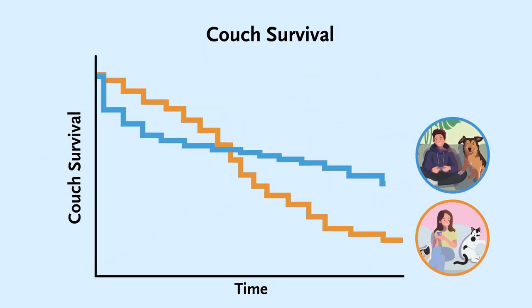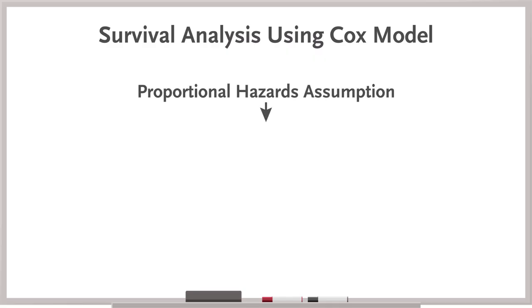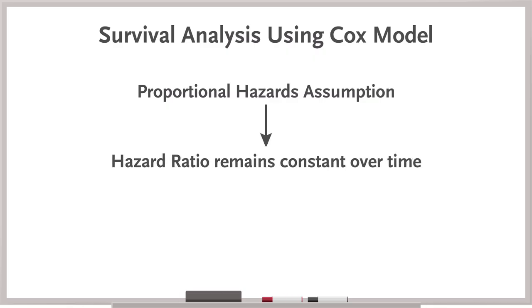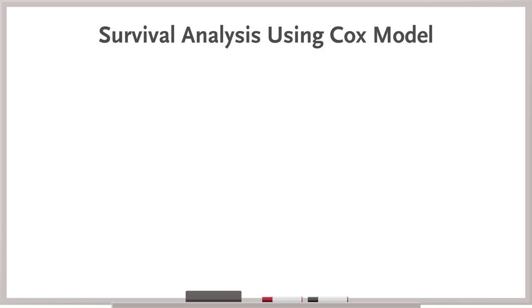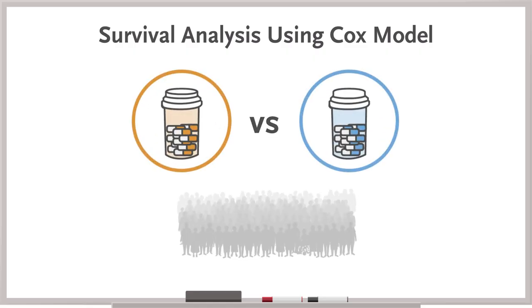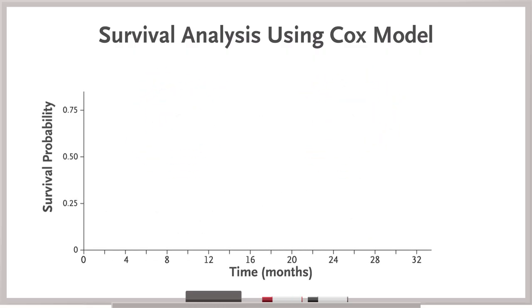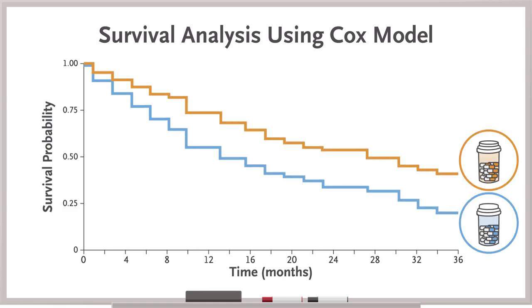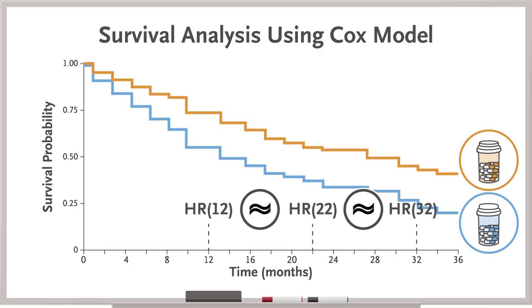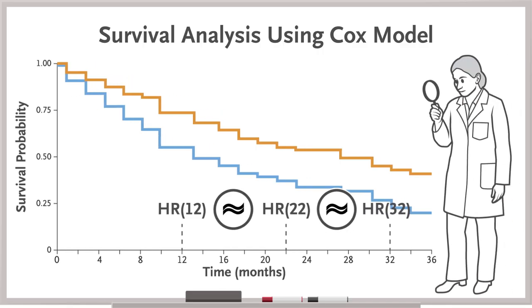But as soon as you plot your data and stare at the two crossing curves, you realize you have a problem. Survival analysis using a Cox model relies on the proportional hazards assumption, which says that the hazard ratio — that is, the rate of the outcome in one group relative to the other — remains constant over time. When you look at the Kaplan-Meier curves of survival over time, the lines are approximately parallel, meaning at any given time point the ratio of the hazard rates is the same. Visual inspection is not enough to definitively assess the proportional hazards assumption; it should be tested statistically.